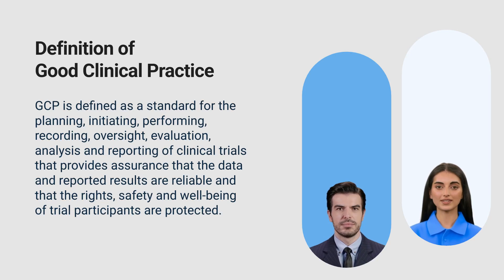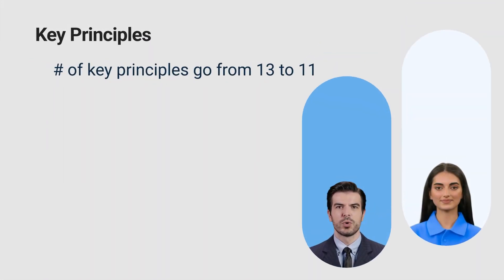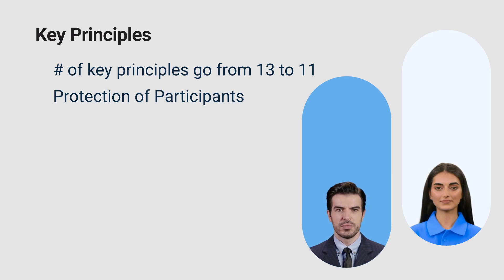This ensures that trials are conducted according to sound scientific principles and meet high ethical standards, keeping pace with modern advancements in clinical research practices. With this foundational understanding, let's start with the refined key principles that guide these practices. The key principles are at the core of the E6 R3 guidelines. These have been refined from 13 to 11 principles to provide clearer and more focused guidance. The first and most important principle is the protection of participants. This includes ensuring informed consent, protecting the privacy of participant data, and monitoring for any adverse events throughout the trial. The new guidelines provide more detailed strategies for achieving these protections, such as enhanced data privacy measures and more robust monitoring frameworks.